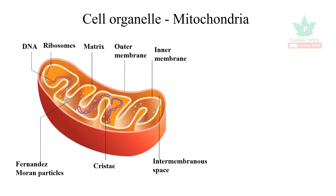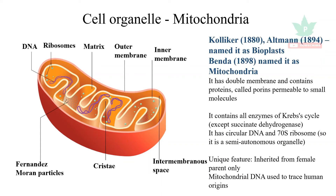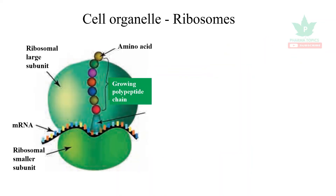The next organelle is mitochondria, which is the powerhouse of the cell. It contains folds called cristae and particles called Fernandez-Moran particles. It was previously named bioplast by Kolliker and Altman, and later named mitochondria by a Swedish scientist. It is permeable to most molecules, and all enzymatic activities of the Krebs cycle occur in the mitochondria except succinate dehydrogenase. It contains some DNA, making it a semi-autonomous organelle, and is inherited from the female parent only, used to trace human origin.